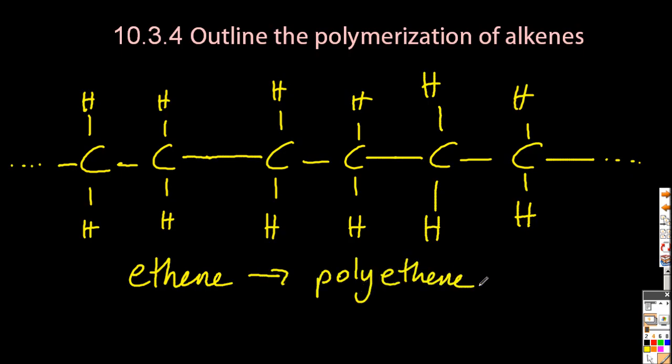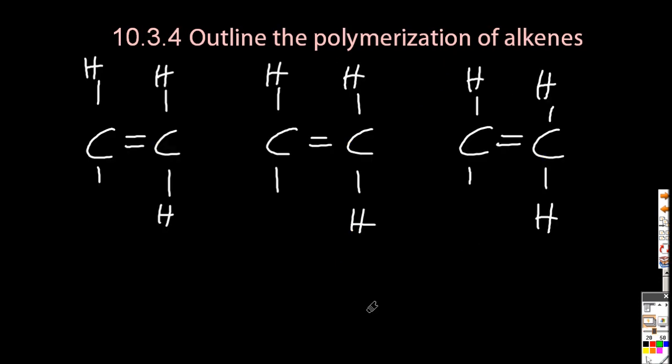The monomer, the beginning unit, is called, in this case, ethene, and polyethene is the multiple units put together. I've put square brackets around the repeating unit.